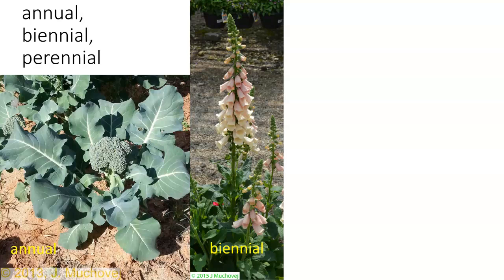So we have a biennial — two years or two growing periods in order to produce seed. Examples of biennials include onions, carrots, parsley, and many different plants that we harvest as roots, bulbs, or leaves, which do not flower in the same season.